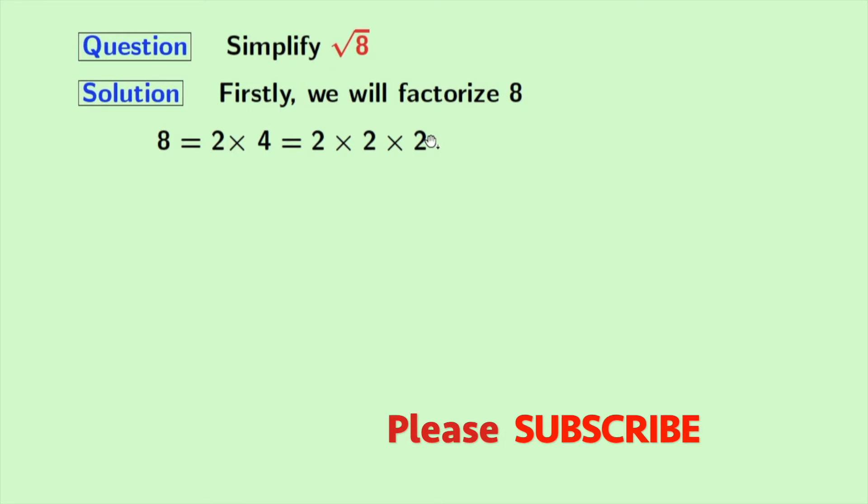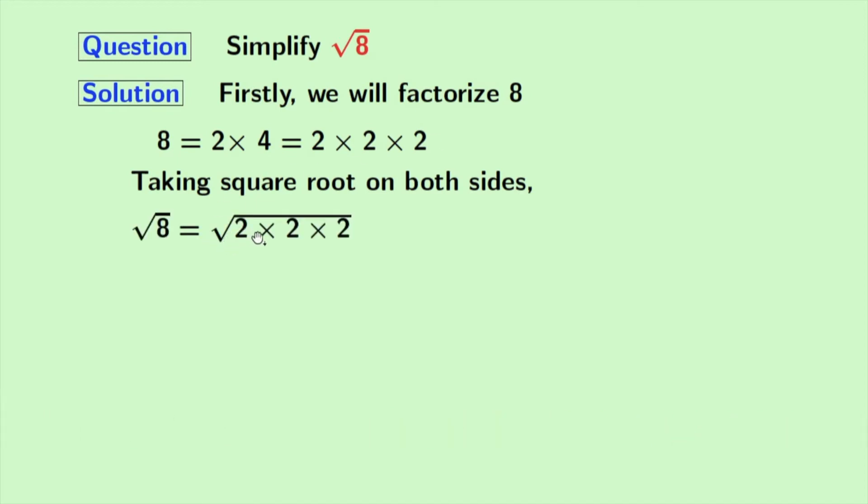Now, we will take square root on both sides. Doing that, we get square root of 8 is equal to square root of 2 times 2 times 2.